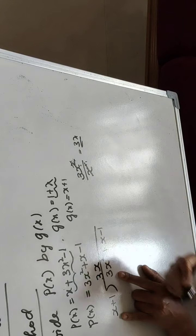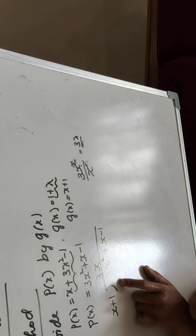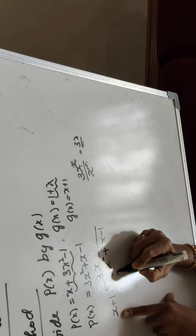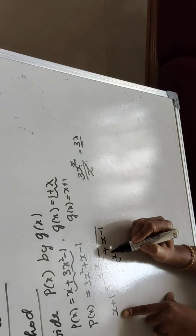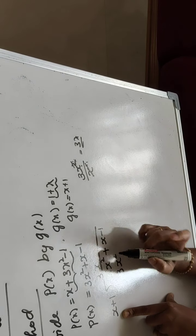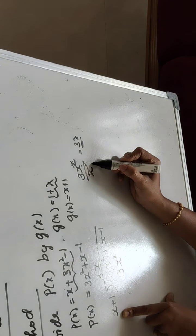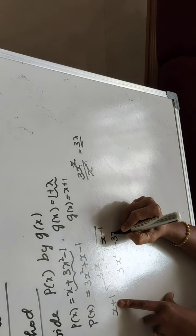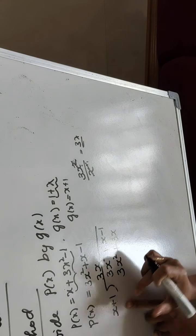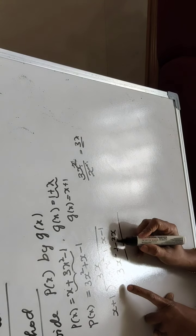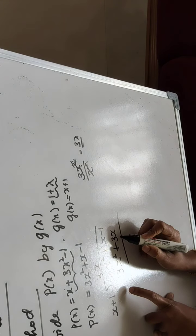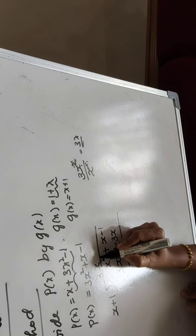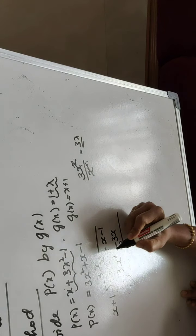Write 3x as the quotient. Now multiply the quotient by both terms of the divisor: 3x times x gives 3x squared, and 3x times 1 gives 3x. Our intention is to make the first terms match. Be careful about the signs — plus here means plus. Now change the sign of the line below: plus 3x squared becomes minus 3x squared, so they cancel and give 0.